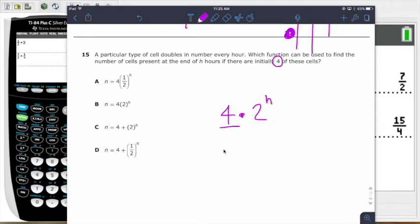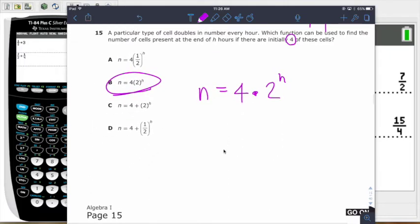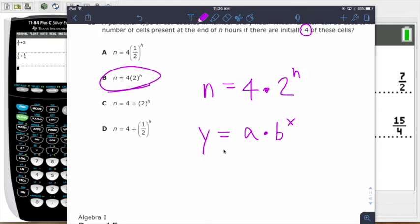I guess they wanted to use n for the number. So I believe answer B is going to be the best choice there on that. Now, with that being said, we can take your generic form of an exponential growth or decay formula, and we can kind of talk about what the pieces mean here. So that 4, that was the initial amount. So we're going to say A is an initial amount.